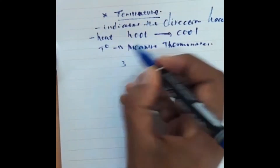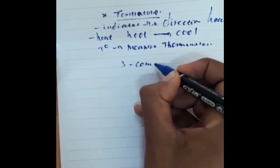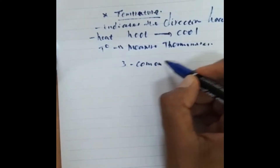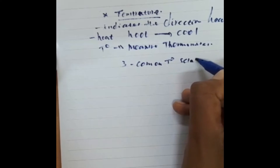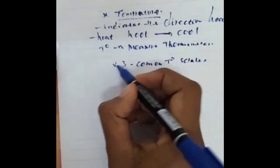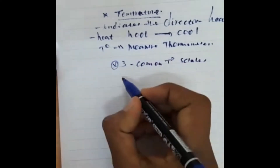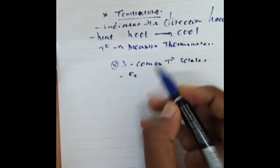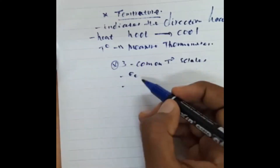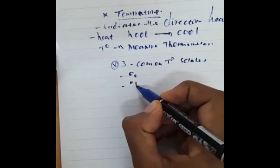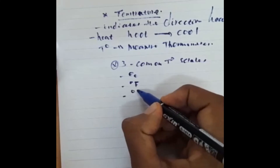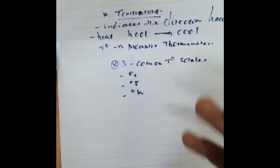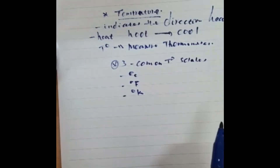Three common temperature scales: degrees Centigrade, degrees Fahrenheit, and degrees Kelvin. Those three common temperature scales can be used to indicate the flow of heat spontaneously.